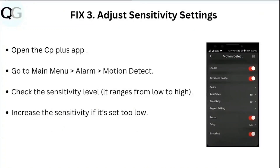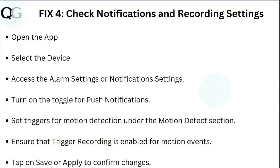Step three: adjust sensitivity settings. Open the CP Plus app. Go to main menu, then alarm, then motion detect. Check the sensitivity level and increase the sensitivity if it is set too low.